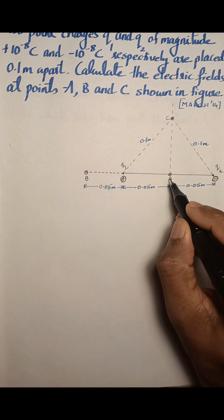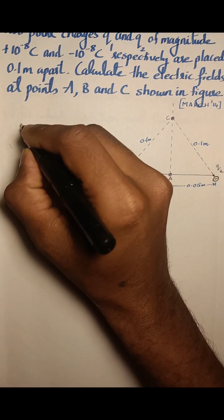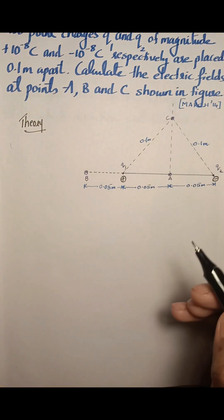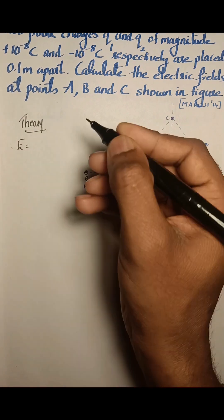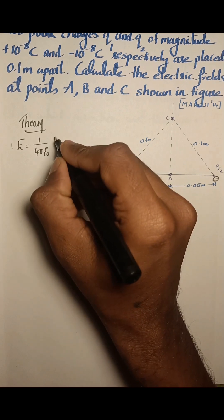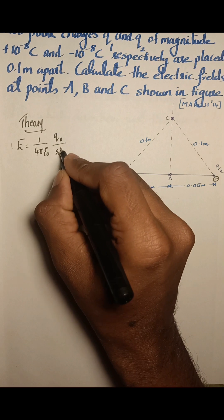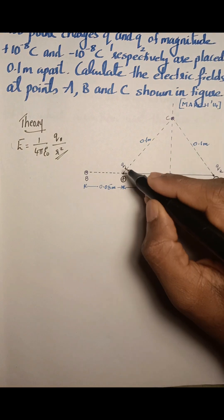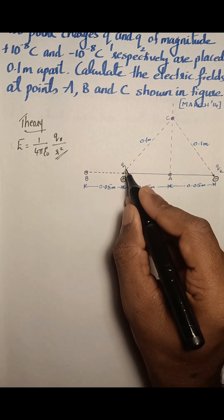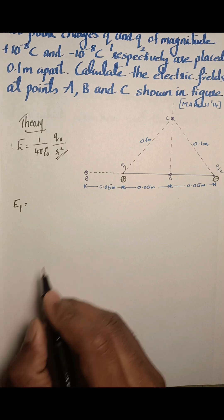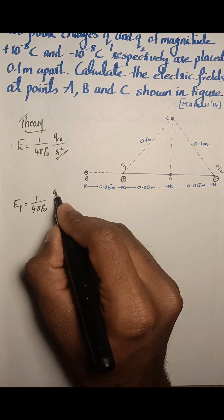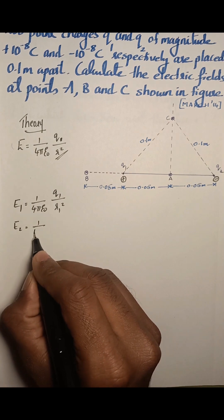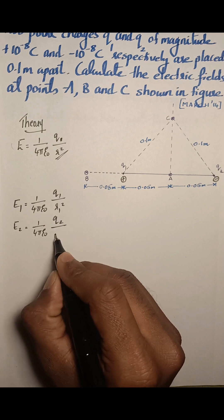First let us solve for point A, the midpoint between Q1 and Q2. We are asked to find the electric field due to multiple charges at a point. According to Coulomb's law, the electric field due to a point charge is E = (1/4πε₀) × q/r². The electric field produced by the first charge is E1 = (1/4πε₀) × Q1/r1², and by the second charge is E2 = (1/4πε₀) × Q2/r2².